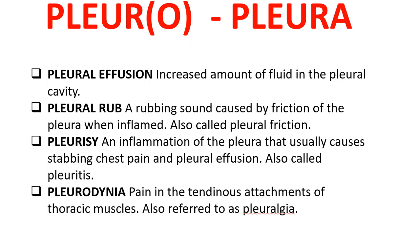The pleura is the layer that covers the lungs. Examples: 'Pleural effusion' is an increased amount of fluid in the pleural cavity. 'Pleural rub' is a friction sound. 'Pleurodynia' is pain and tenderness of the thoracic muscles, also referred to as pleuralgia. 'Pleurisy' is an inflammation of the pleura that usually causes stabbing chest pain and pleural effusion.